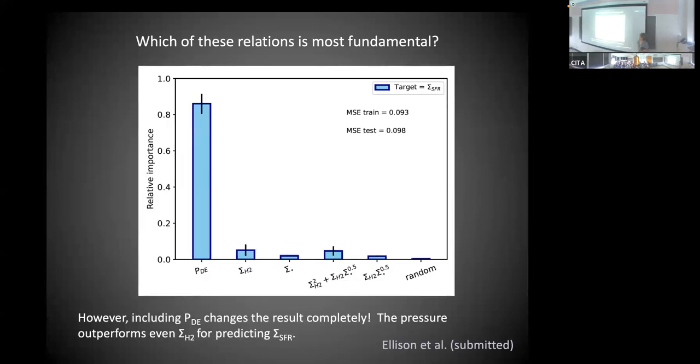But now we can put in the dynamical equilibrium pressure. Now the picture really changes, because when you put in the dynamical equilibrium pressure, suddenly the relative importance of molecular gas shrinks right down because you've given it something it thinks is much more important. It's important to recognize it's a relative importance - it just means of the variables you give it, which does it think is most important. Now, the pundits amongst you are going to say, you're cheating because you've told us this pressure combines stellar mass and gas. So of course it's going to do better.